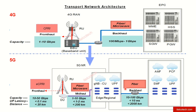Going back to the backhaul, which connects the edge location to the core network: at the edge location we have a number of central units and UPFs, and there is quite heavy lifting to be done at the backhaul. The data requirement goes up to 100 Gbps and the latency requirement is less than 10 milliseconds.